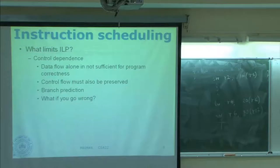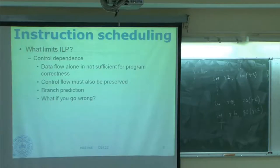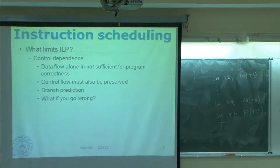There has to be a systematic way of removing wrong instructions from the pipeline and fixing certain other things. For example, you will be renaming registers, and whatever you have renamed on the wrong path will have to be fixed. So we will see all these problems very soon — it is not as easy as a single-instruction linear pipe, it is much more involved and complicated because of various types of renaming.